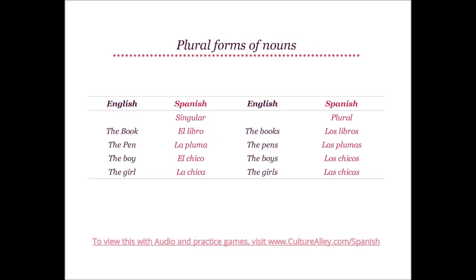Now let's revise plural forms of nouns. In the singular form, the book translates to el libro; in plural form, the books becomes los libros. The pen becomes la pluma, while the pens will be las plumas. The boy is el chico; its plural form, the boys, becomes los chicos. The girl is la chica, while the girls is translated as las chicas. In all of these forms, we just added an S at the end to convert them to plural forms.